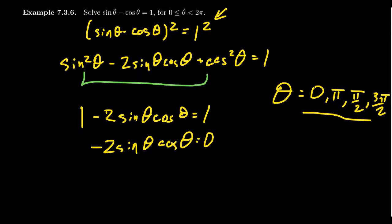What I want to do instead is look at this. We have 2 sine theta cosine theta. That's just negative sine of 2 theta equals 0. Times both sides by negative 1. You get sine of 2 theta equals 0.